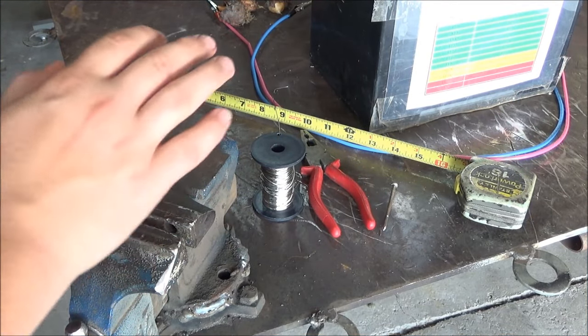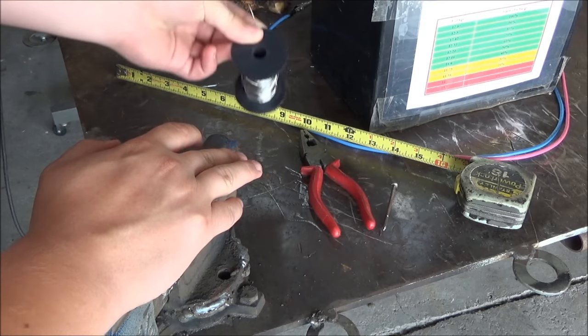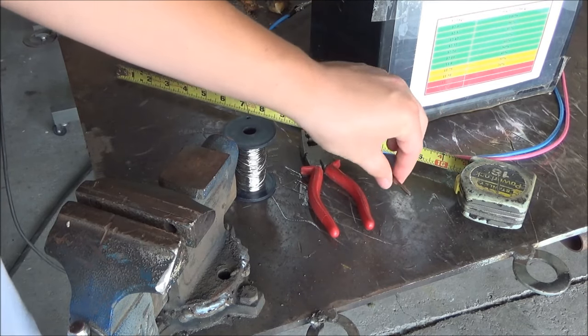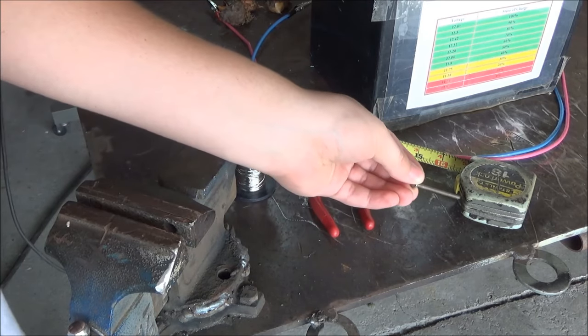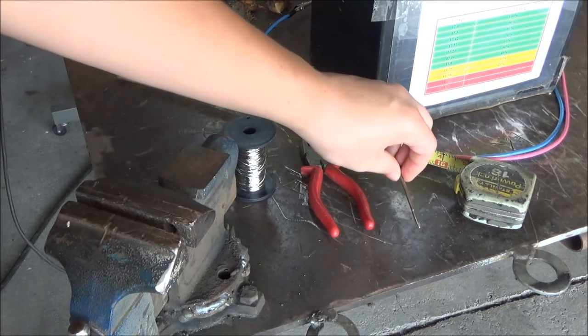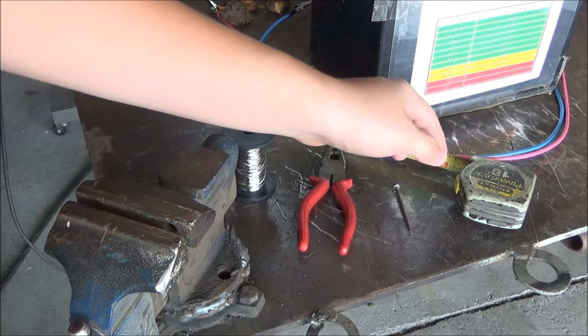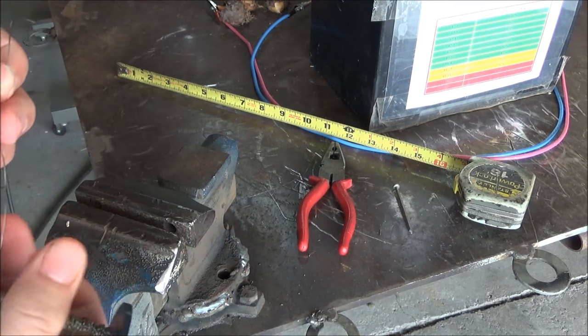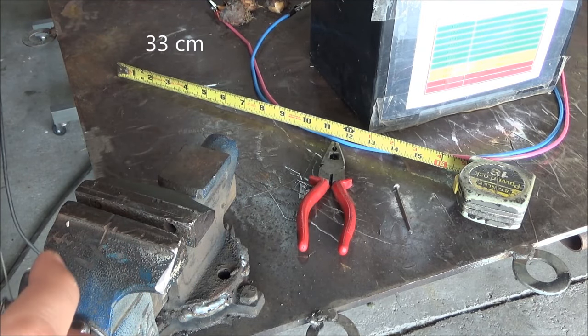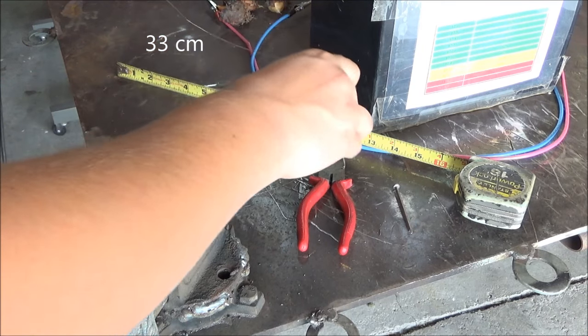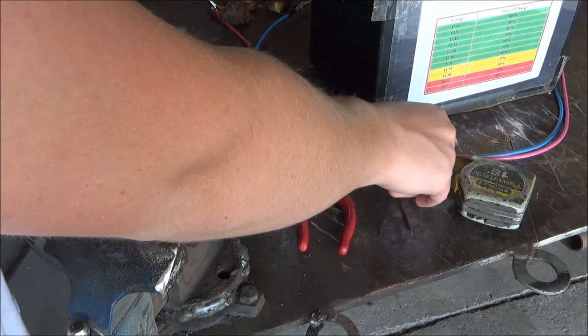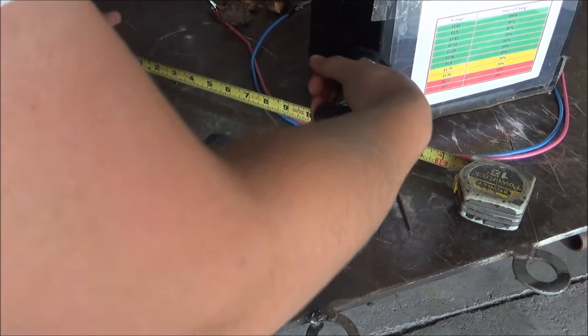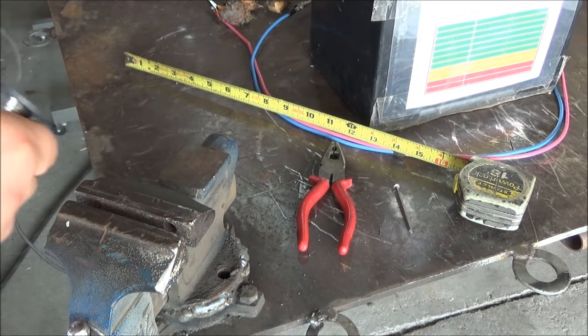Alright, so for this part of this video here, which is making the igniters, you're going to need a vise or something to hold onto a nail with or whatever you want to use to wrap the wire around in order to make it coil. Something to cut the wire with and something to measure the wire with. So I'll go ahead and take this wire and you're going to want about 13 inches of it.